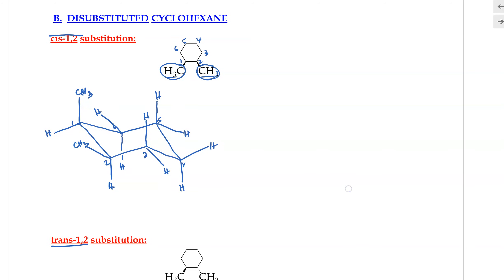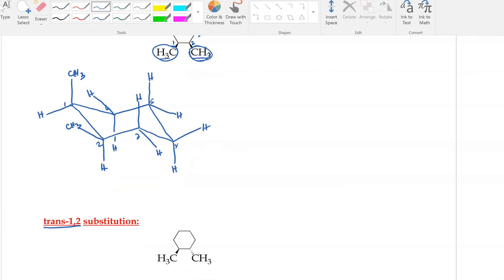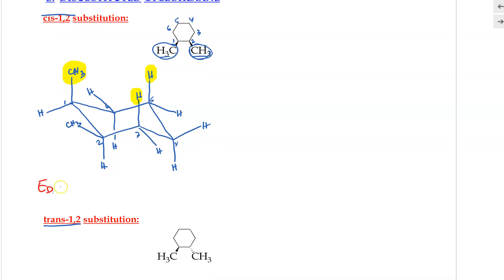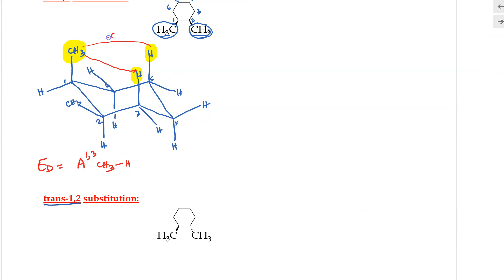Now let's calculate its energy. We look for any type of interaction we have learned previously. We see this methyl group — when it's located at the axial location, it can interact with the two hydrogens that are three bonds away. This is the A1,3-diaxial interaction. So ED equals: we have an A1,3-diaxial interaction between the CH3 group and the hydrogen. Each of these is 0.9 kcal/mol, so adding both together, this equals 1.8 kcal/mol.